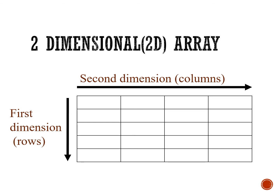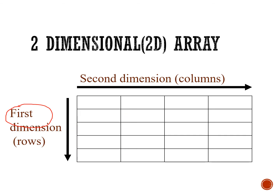This is an example of a visualization of how the two-dimensional array looks like. The first dimension array that we learned in the previous video is called one dimension — if we have only one column it is called a one-dimensional array. In this lesson you will learn about the two-dimensional array, which has a second dimension of more than one column — for example, one, two, three, and four columns.